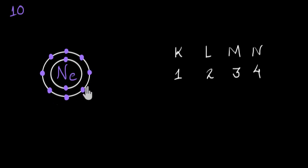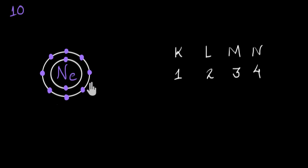One thing to notice here is that the outermost shell of neon — or the valence shell (the outermost shell is also called the valence shell) — has eight electrons in it. Now with this, let's look at one more noble gas example.